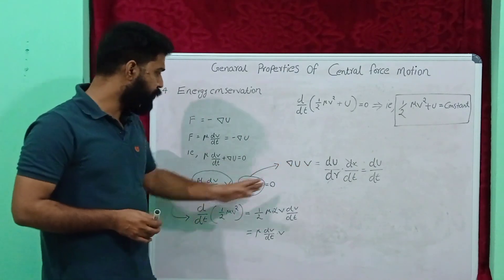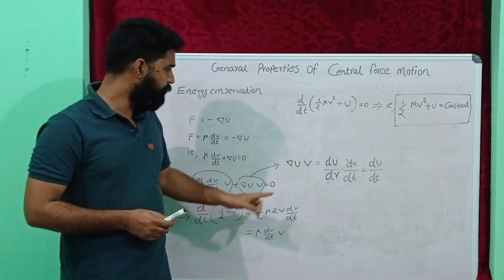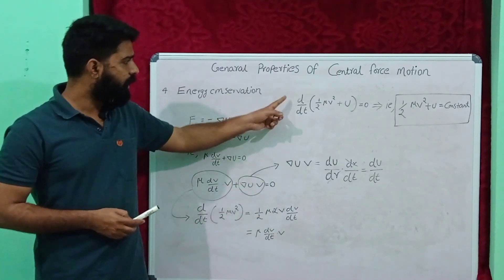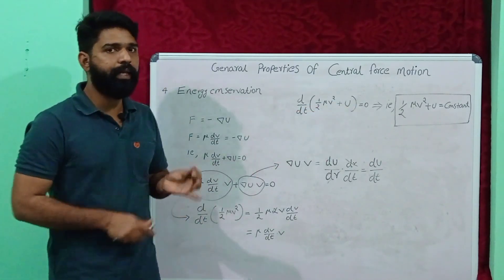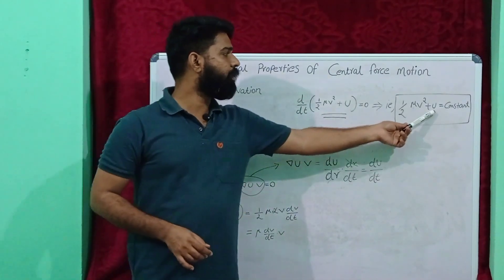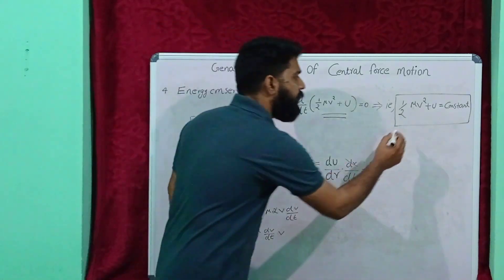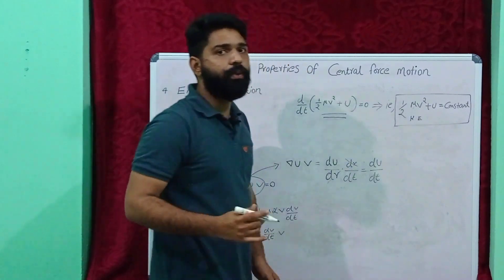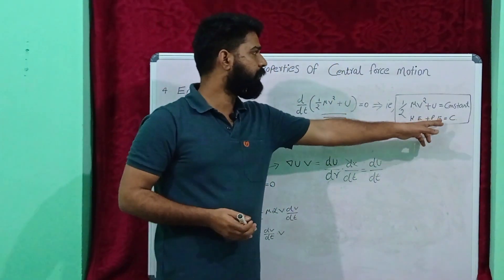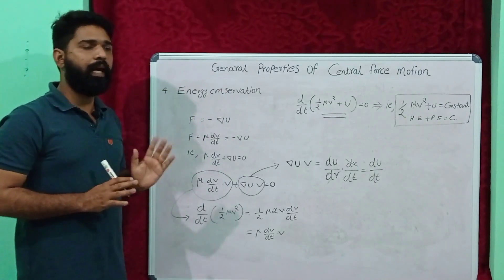We can express these two terms together, giving d by dt of one half mu v squared plus U equals zero. That means this term is constant: one half mu v squared plus U equals constant. One half mu v squared is kinetic energy, and U is potential energy. So kinetic energy plus potential energy is constant — in the case of central force motion, the total energy is conserved.